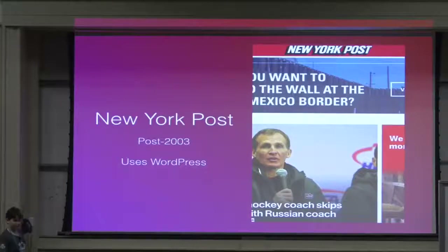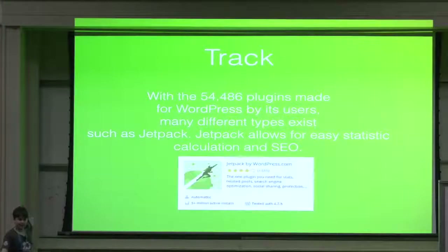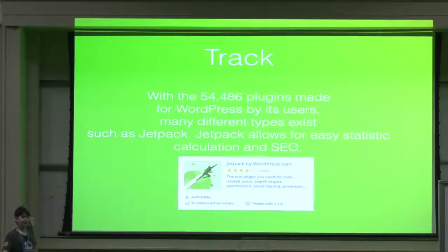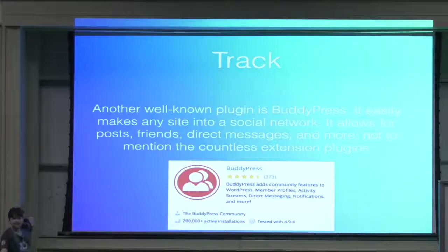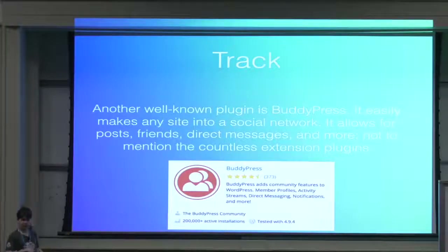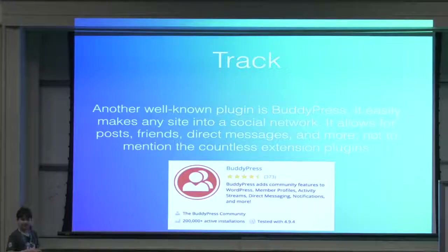That leads us to another pro of WordPress, which is Track. There are over 54,000 different plugins made for WordPress that can do a multitude of things, and they're made by the users — meaning that whatever the users need, the users can have. A great example of a plugin is Jetpack, which is a statistic tracking and all-in-one SEO solution for many websites, created by WordPress.com. Another great example is BuddyPress, which essentially turns any website it's installed on into a full-fledged social network with direct messages, profiles, and posts. This means the people using WordPress can make WordPress into whatever they want, without having to worry about developer consent — they can just jump in and use the code they know.